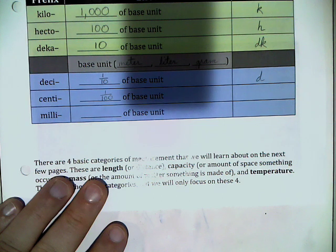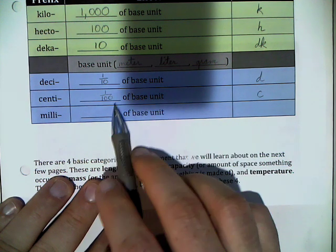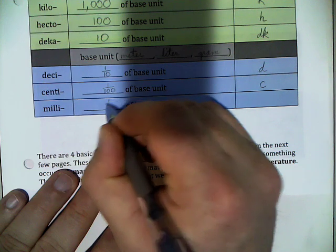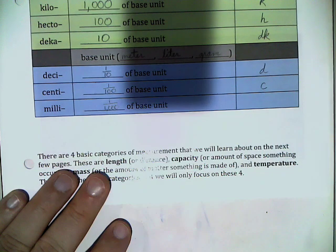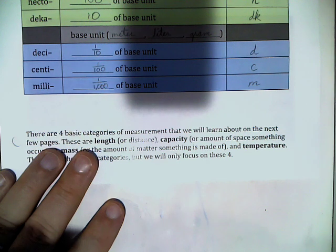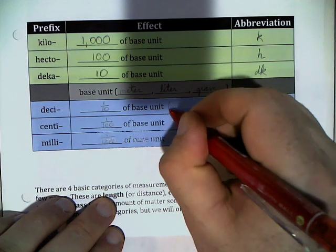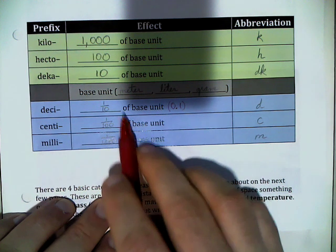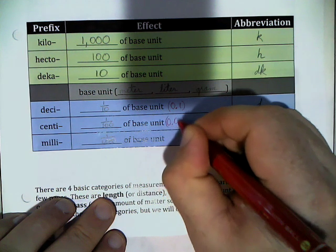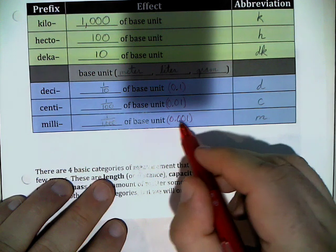CENTI means one-hundredth, abbreviated C. We're most familiar with that as a centimeter — a centimeter is one-hundredth of a meter. MILLI is one-thousandth, abbreviated lowercase m. Now, since this is a decimal system, we typically won't write these as fractions; we'll write them as decimals. So one-tenth of the base unit is 0.1, one-hundredth is 0.01, and one-thousandth is 0.001 of that base unit.